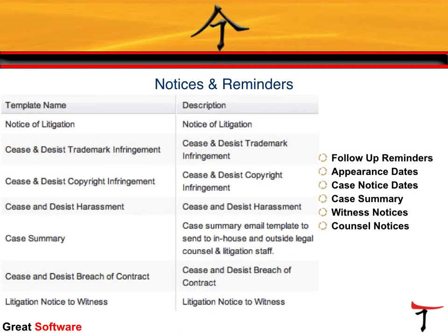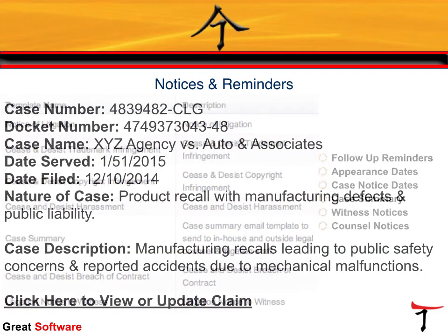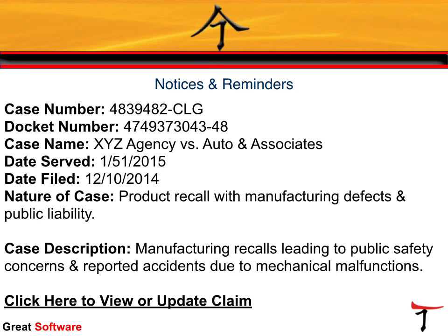A1Tracker also supports legal notices and reminders which can be sent on demand or scheduled to send at some future due date. For example, if there is a next litigation date scheduled, the system can send an automatic notification 30 days before the next litigation court date. A1Tracker also supports private labeled and custom email templates. When a notification sends to your recipients, you can control the content by choosing which fields from the litigation software merge into your notification templates, and you can also specify additional carbon copy and blind carbon copy recipients.